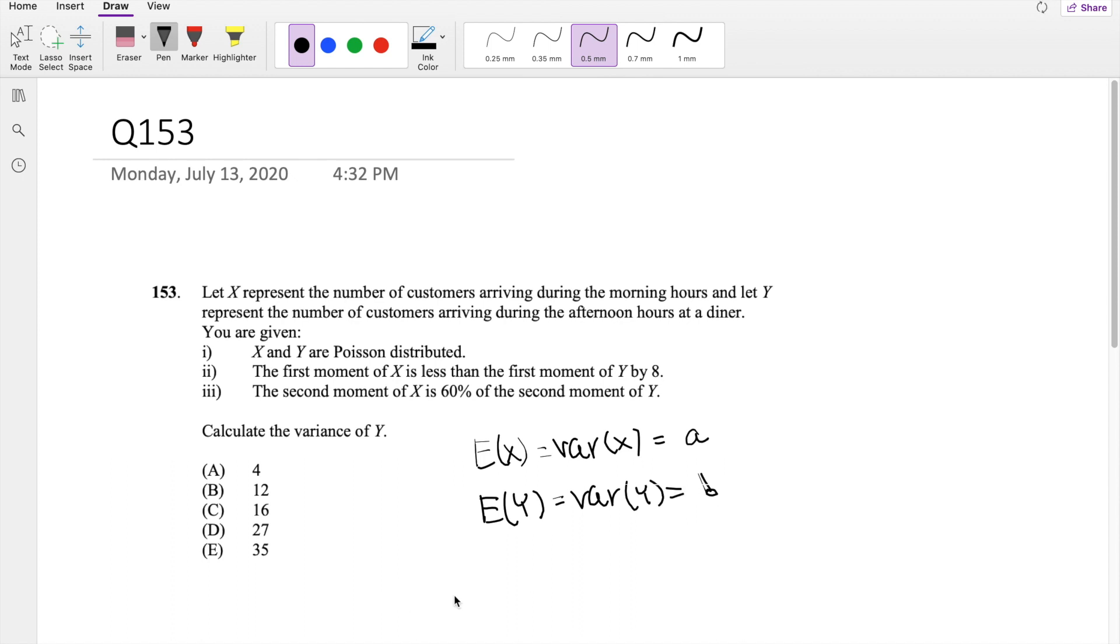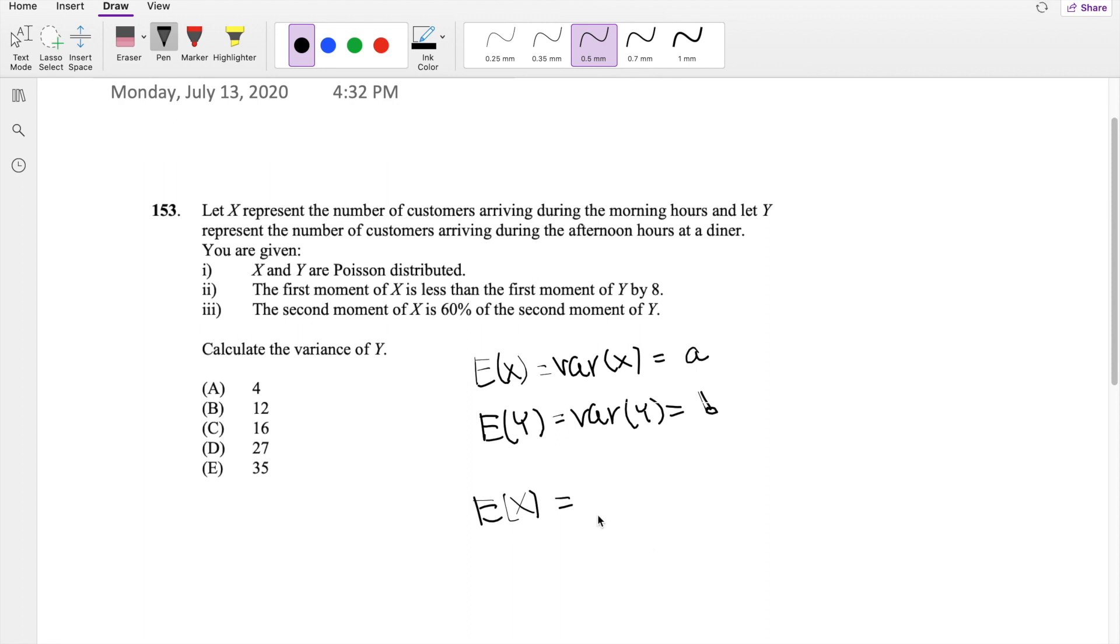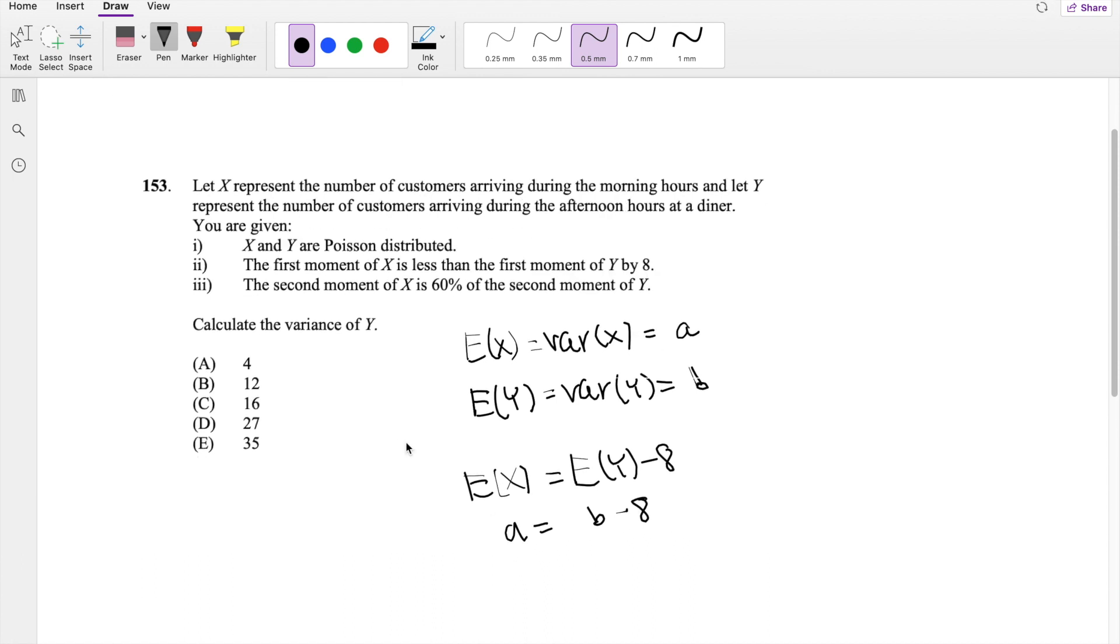So we're going to call this b. Then they go on to say that the first moment, a.k.a. the expectation of X, is less than the first moment of Y by 8. So if we put it in terms of a and b, then we have a is equal to b minus 8.